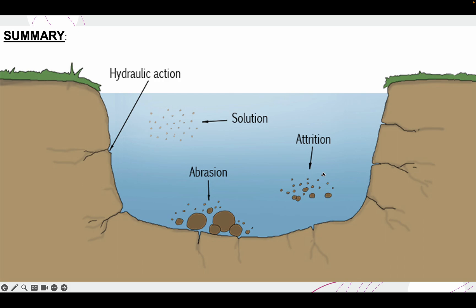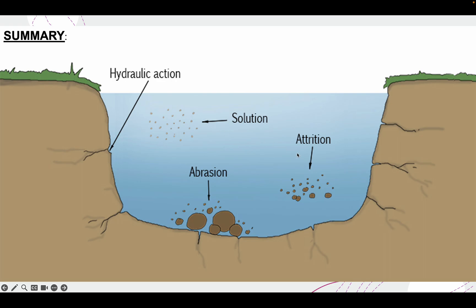In summary: hydraulic action — waves crash into riverbanks, pushing air in, eventually weakening the cliff until it collapses. Abrasion — huge rocks roll along the riverbed, slowly scraping and wearing away the riverbank, like sandpaper. Attrition — bigger rocks crash into each other and break down into smaller rocks. Solution — rocks like limestone dissolve into the water, forming a solution. That is coastal erosion.